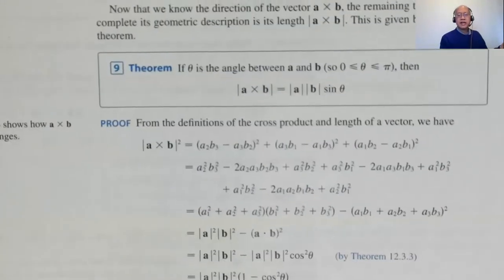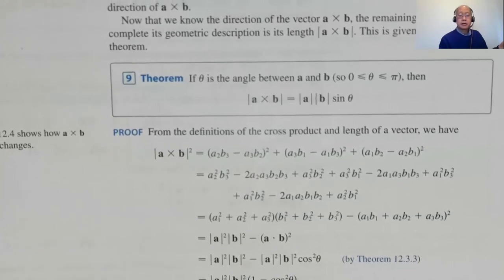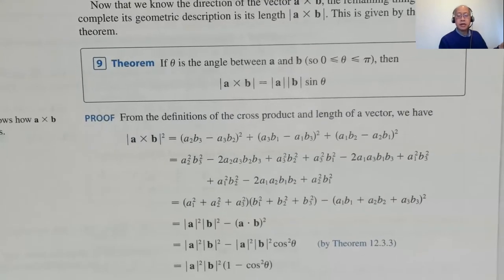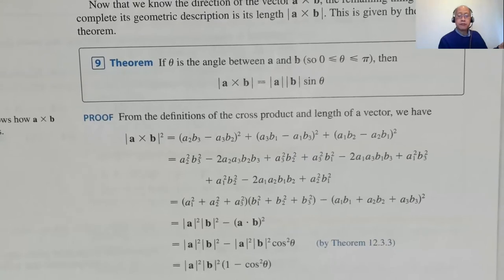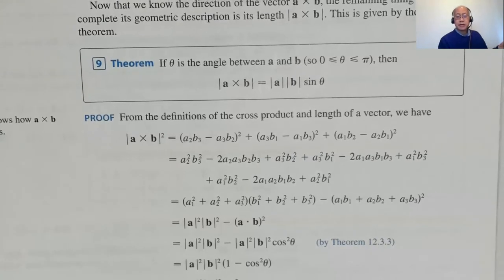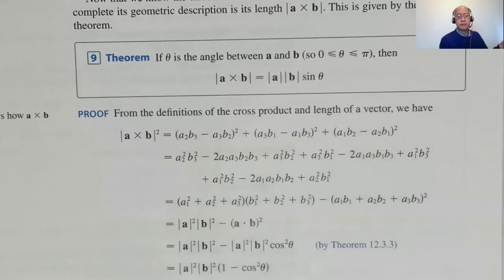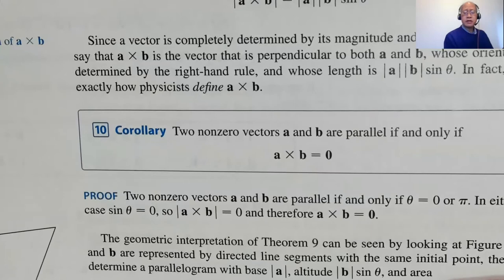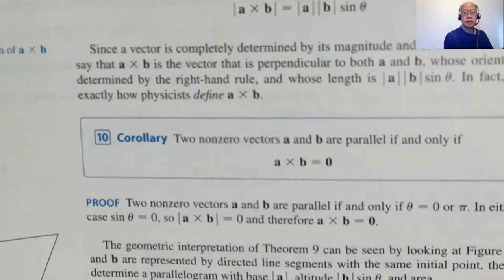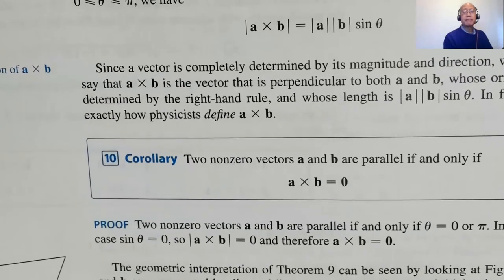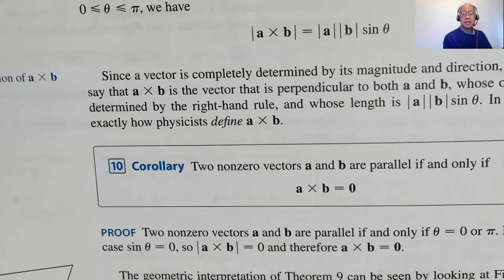Theorem 9 on page 817: the magnitude of A cross B equals |A||B|sin(θ). It's actually easier to use the dot product theorem to find a particular angle since dot products are easier to compute than cross products. A corollary: two non-zero vectors A and B are parallel if and only if A cross B is the zero vector. Note that a cross product gives back a vector, whereas a dot product gives back a scalar.